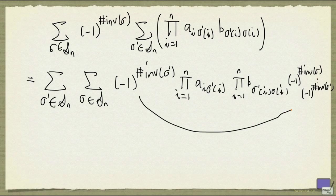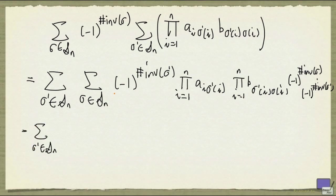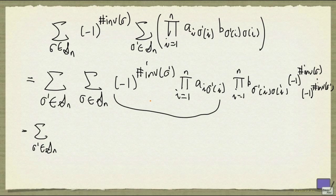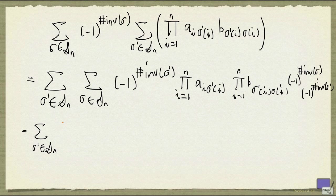Alright, so these two multiplied together give you one. So I've basically done nothing, except throwing this thing inside here. Now I can rewrite this as, and I'm going to bring this outside the summation because this whole expression does not depend on sigma. So this is what I have.